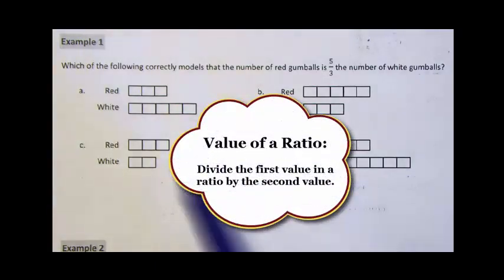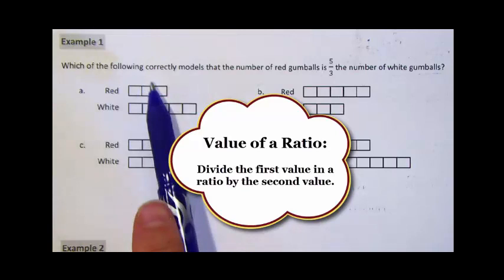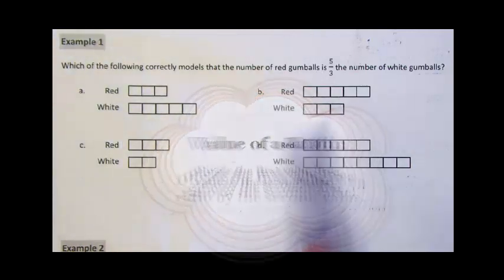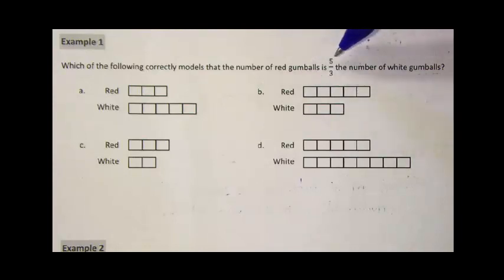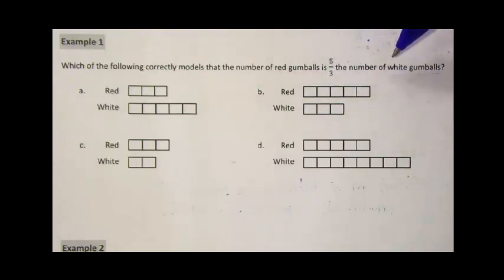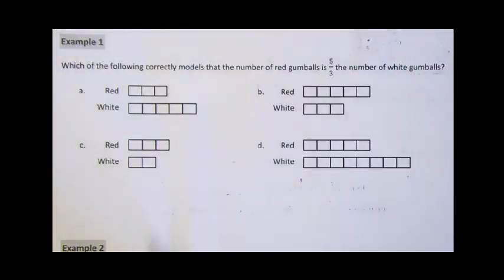In this example, we want to know which of these four tape diagrams models the situation where the number of red gumballs is five-thirds the number of white gumballs. The first thing we're going to do is write the ratio for each of these.